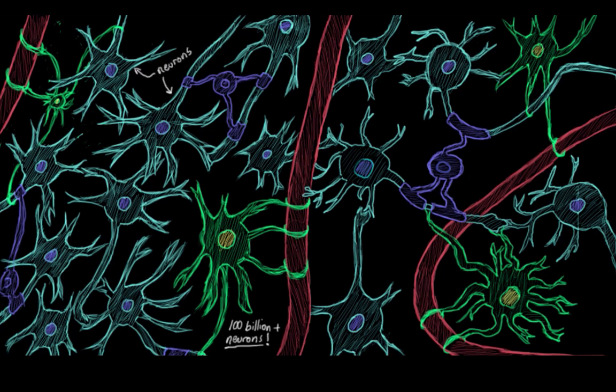So these here in blue, these are the neurons, and they're connected to each other so that they can pass messages between themselves, and that allows the brain to control our bodies. So these connections are called synapses.